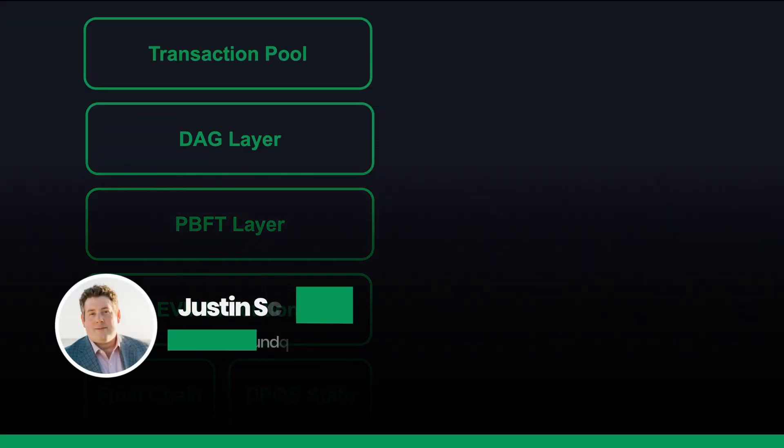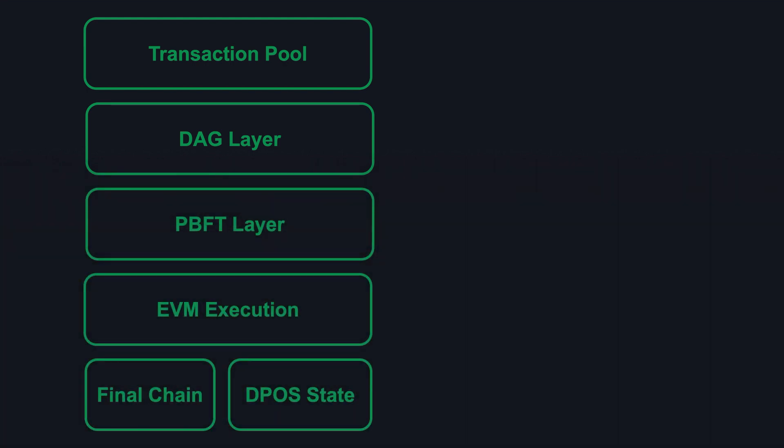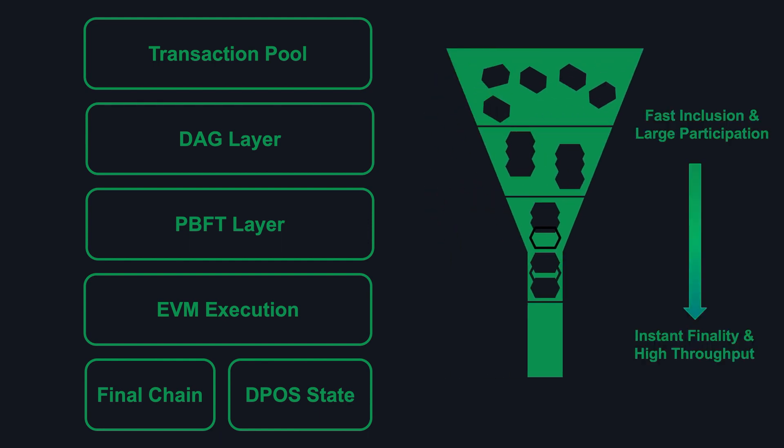Let's discuss the overall ledger architecture. The ledger is implemented as a series of layers. Of course, you have a transaction pool, very similar to most blockchains. And then we have two layers of consensus: a DAG layer that's used to produce blocks of transactions, and a PBFT layer that provides finality on that ordering. That gets sent off to the EVM execution layer. And from that we maintain a final chain and a DPoS state.